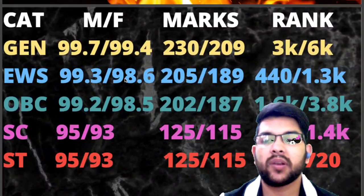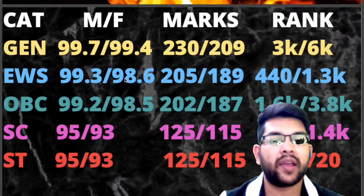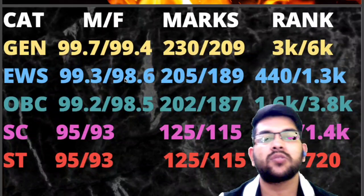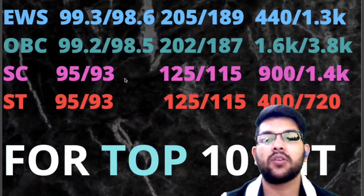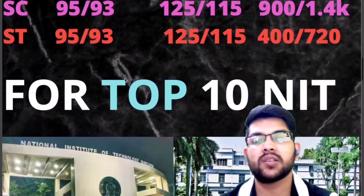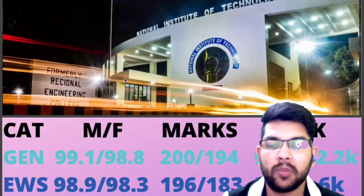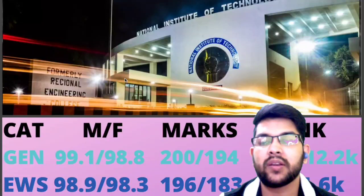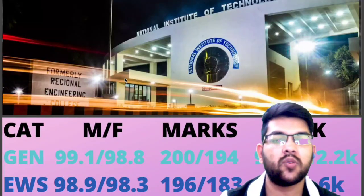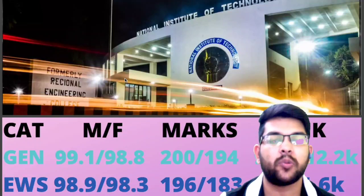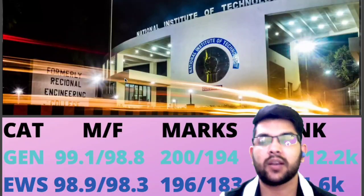For ST category in top 5 NIT, percentile required is 95 and 93 again, marks requirement will be the same, and the ST category rank will be 400 and 720. Now for top 10 NIT, for general candidates, your percentile should be 99.1 for male and 98.8 for female, marks 200 and 194, and CRL rank 9,200 and 12,200 — because general category gets only the CRL rank.